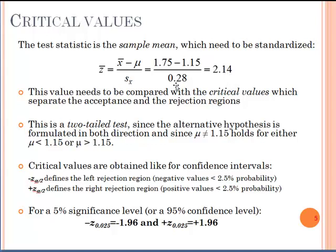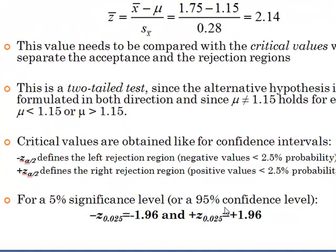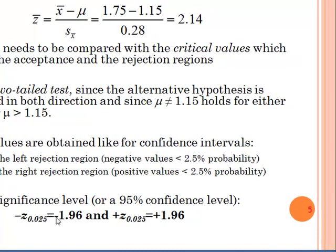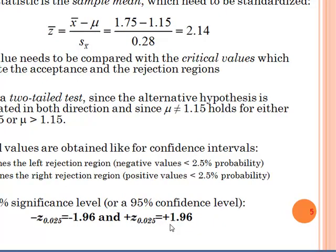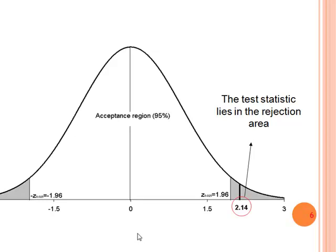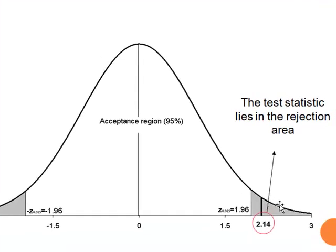This value needs to be compared with the critical values. It's a two-tailed test where we are testing mean is not equal to 1.15. The 95% confidence level suggests that if the value is less than minus 1.96 or is greater than plus 1.96 then we can reject the null hypothesis. The test statistics lies in the rejection area, it's beyond 1.96.